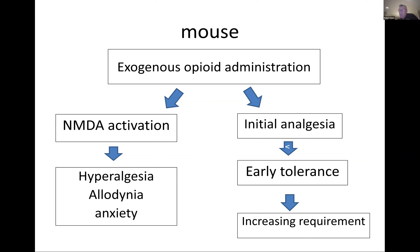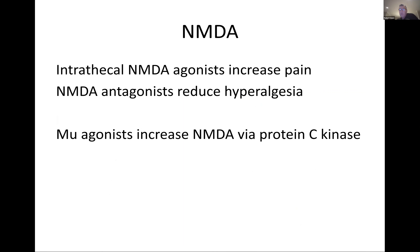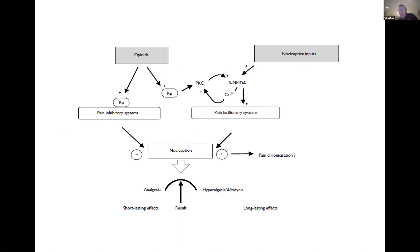The drug administration recruits an opposing neurochemical system. Tolerance is actually an increased pain sensitization, not a reduced opiate effectiveness. On one side you're giving exogenous opiates for analgesia, but there's another pathway — the N-methyl-D-aspartate (NMDA) activation system — causing increased pain response and anxiety. That same opiate taking away pain on the mu receptor is also driving the NMDA activation system, which increases pain perception and anxiety.